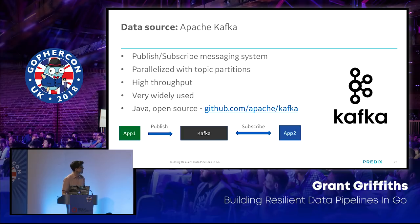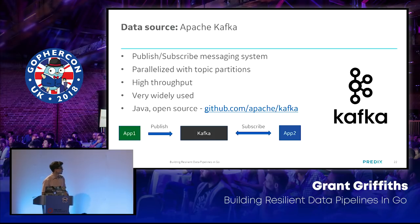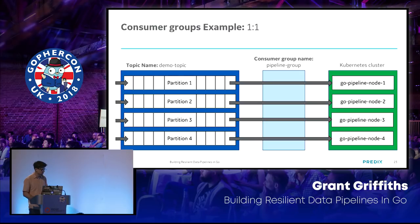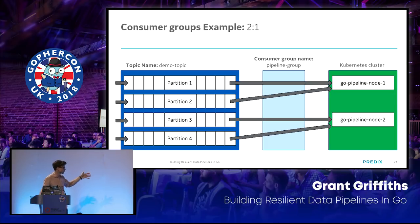We're going to talk about Kafka and Cassandra to give a high-level overview before diving in. Kafka is a publish-subscribe messaging system parallelized with topic partitions. If you want more throughput, you add more nodes and more partitions. It's one of the most widely used messaging systems out there. You could have one topic with four partitions and four subscribers each listening to one partition, or two subscribers listening across four partitions.